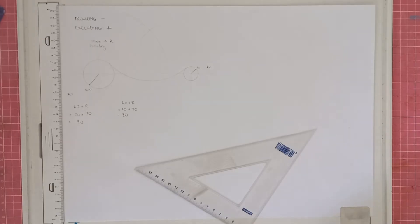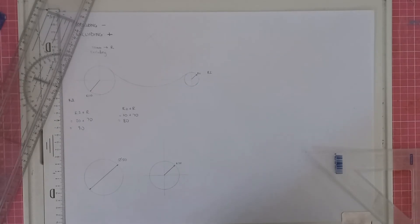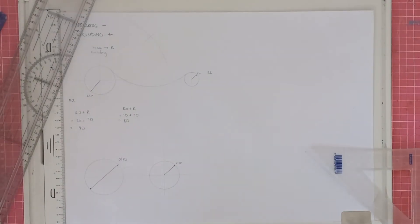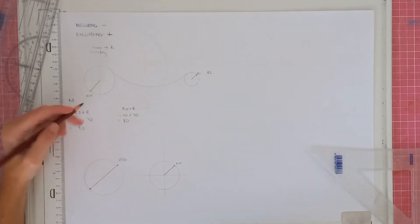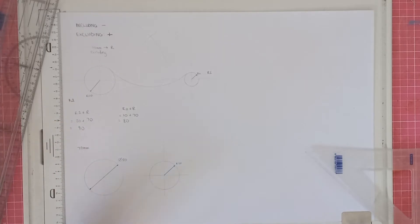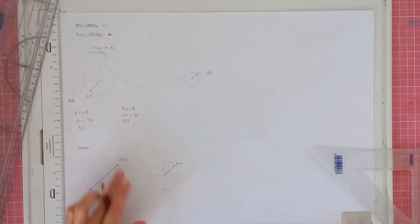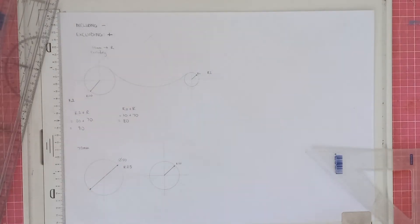Now I'm going to draw the next circles and we'll do an including example. We've got our two circles again, and we're going to construct an including arc with a radius of 70 millimeters once again. Here they've given us the diameter, so we know the radius will be 25.